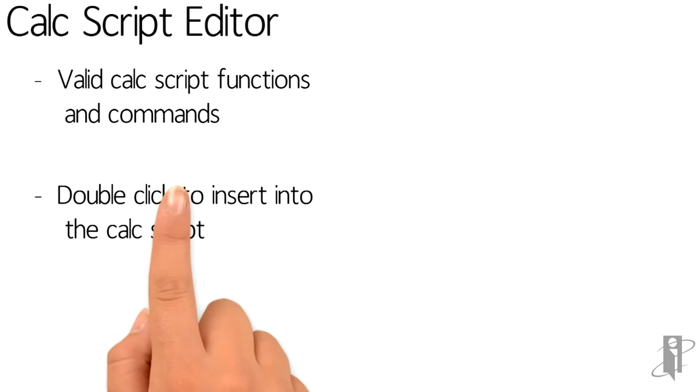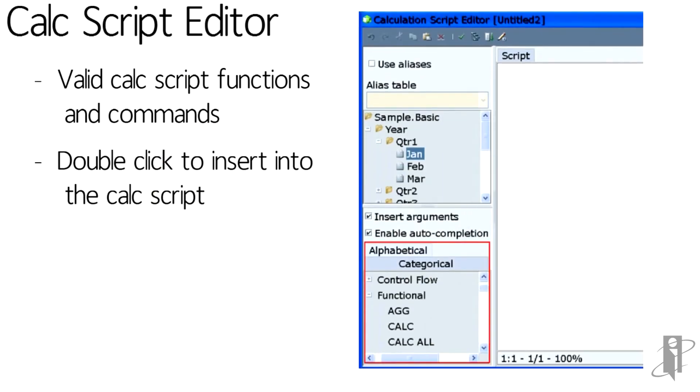Down on the bottom left of that Calc Script Editor, you'll see a little section where we can go find functions and commands and auto-insert those as well. We just double click on it.